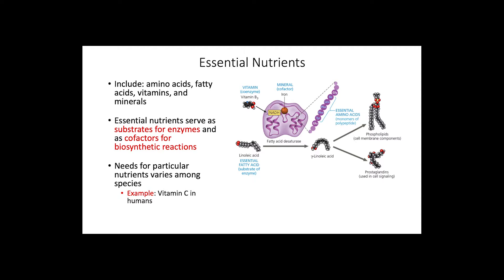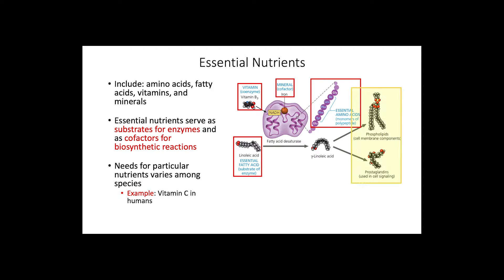In the diagram to the right, we can see how nutrients in the form of vitamins, minerals, amino acids, and fatty acids are required in the conversion of linoleic acid to phospholipids and prostaglandins, two important molecules for cellular structure and signaling.